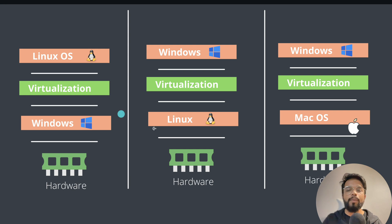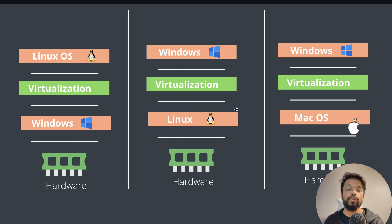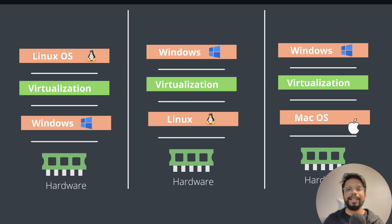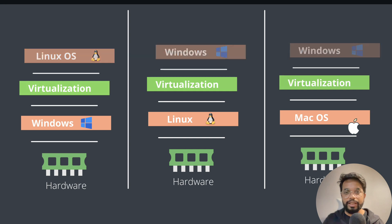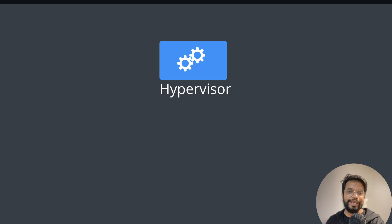This method works on any operating system. As you can see in this slide, no matter if you are using Windows, Linux, or Mac as your primary or host operating system, you can still use virtualization and install another operating system of your choice on top of it. Now let's talk about how to set up virtualization, because we need to understand what creates that virtualization layer.